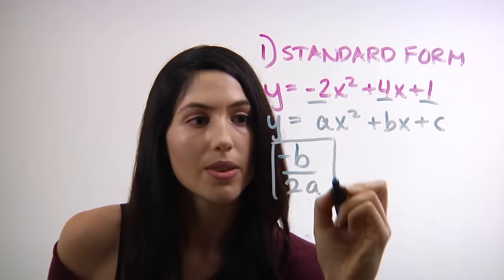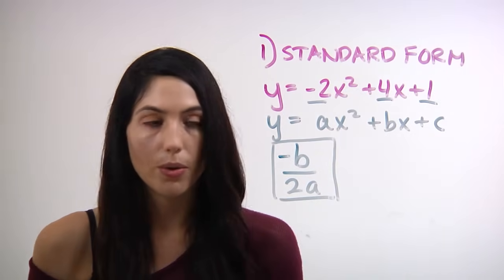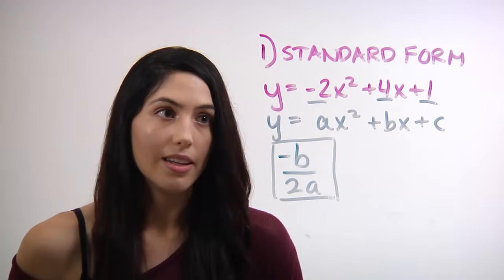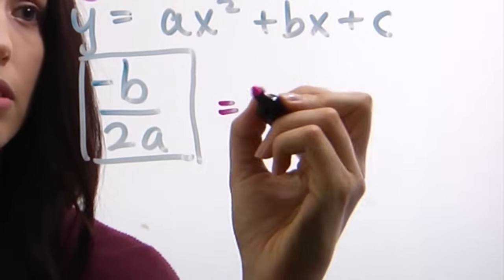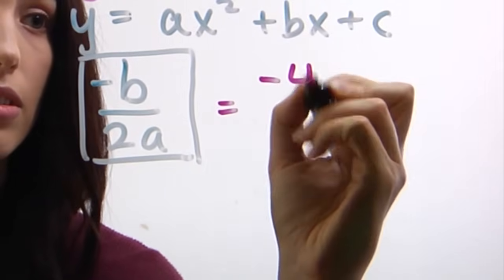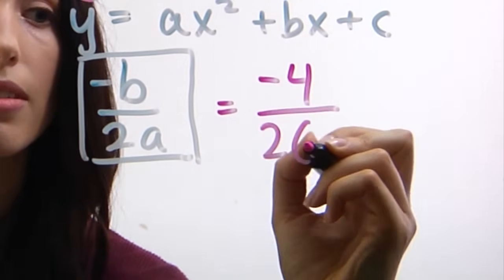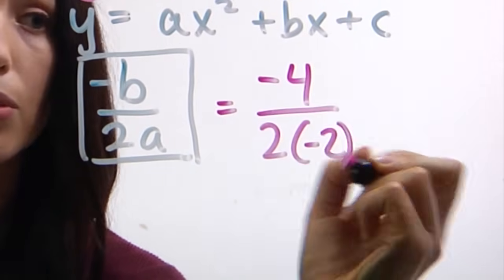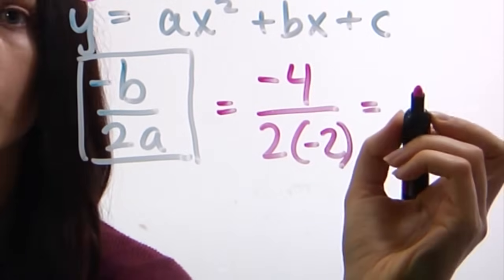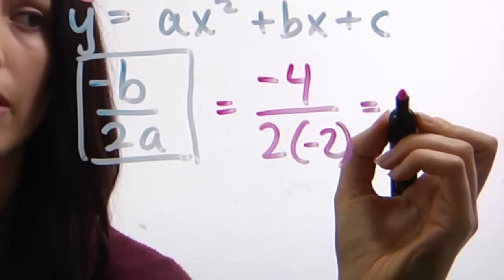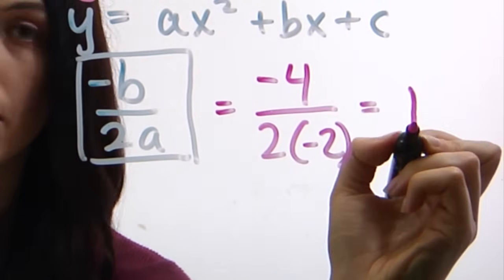So in this problem, negative b over 2a is equal to negative 4 over 2 times negative 2, which turns out to be negative 1 over negative 1, or just positive 1.